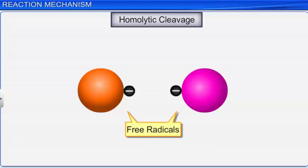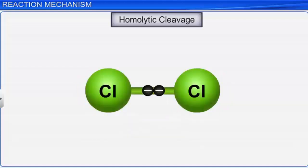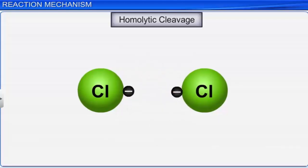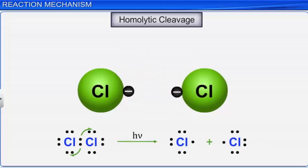The free radicals thus formed are highly reactive due to the presence of unpaired electrons. For example, the homolytic cleavage of the chlorine-chlorine bond in chlorine molecules, induced by heat or light, leads to the formation of two chlorine free radicals.